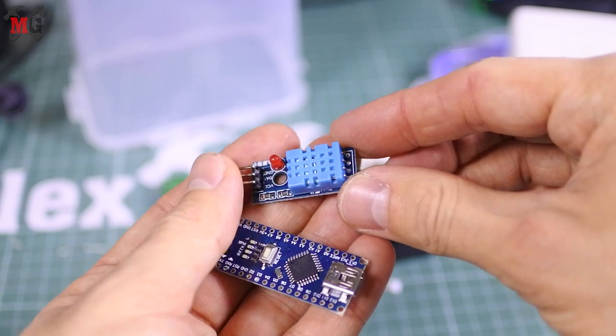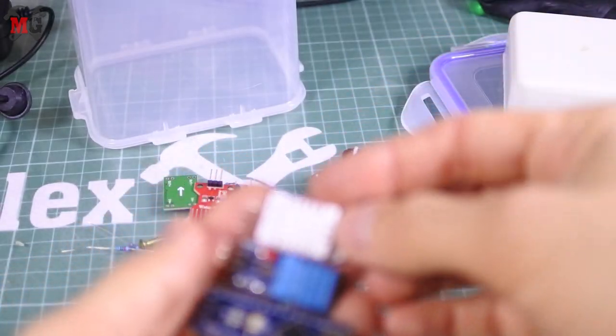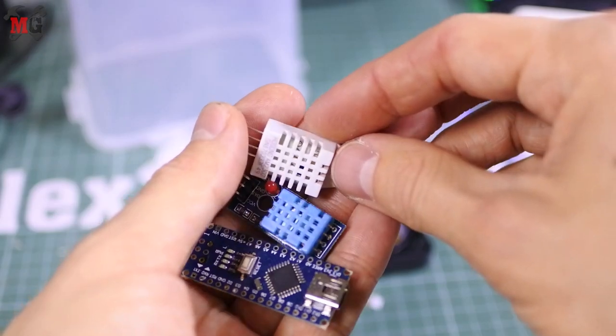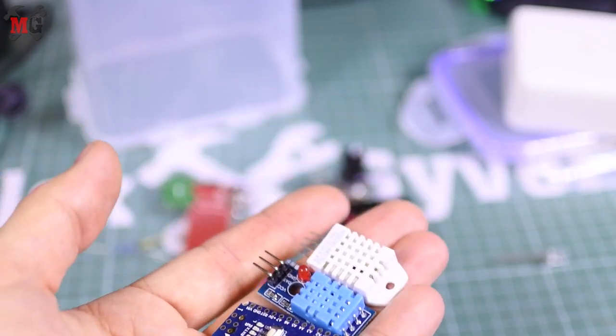The sensor itself is the popular DHT-11 that measures temperature and humidity. You can also take DHT-22, it's much more accurate, but slightly more expensive.